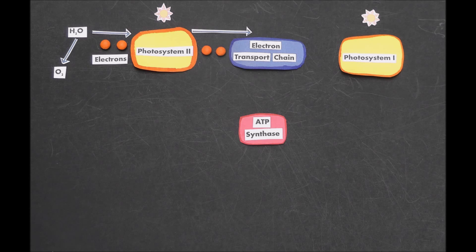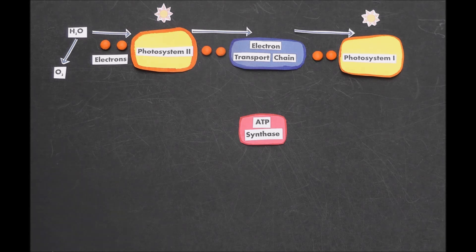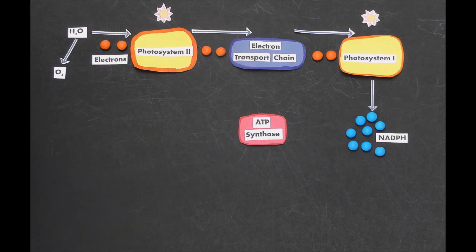The electron transport chain passes the electrons on to photosystem I, where they are re-energized by light and passed on to the electron carrier NADPH. So those electrons that started on water have now ended up being carried by NADPH.